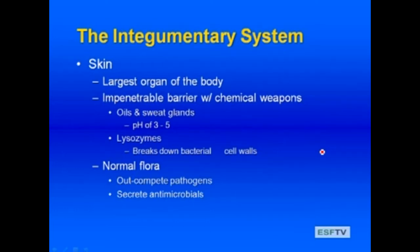The integumentary system is our first line of defense, and our skin happens to be the largest organ of the body. It forms an impenetrable barrier with chemical weapons. The oils our skin excretes, as well as our sweat, can be defensive against invaders. The oil in the sweat glands gives the skin a pH of 3 to 5 — fairly acidic. Sweat also contains lysozymes that break down bacterial cell walls. Our skin also has a complement of natural flora that can outcompete pathogens and secrete antimicrobials, so having normal flora is important.